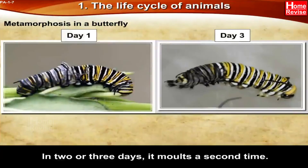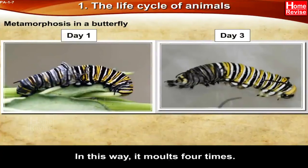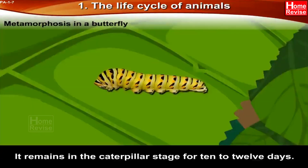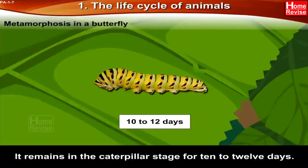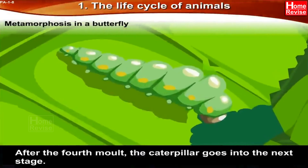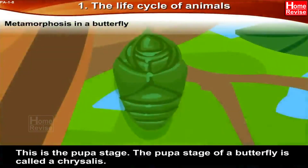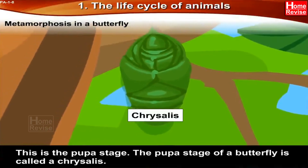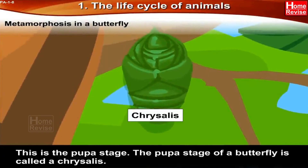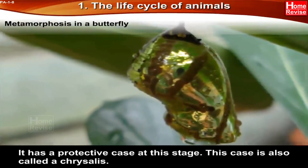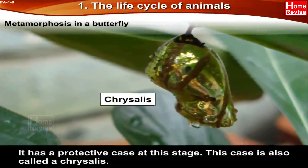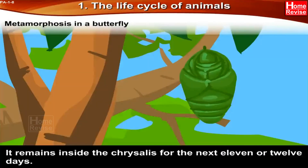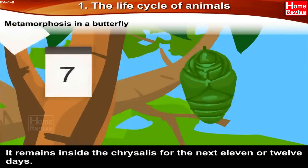In two or three days it molts a second time. In this way it molts four times in total. It remains in the caterpillar stage for 10 to 12 days. After the fourth molt, the caterpillar goes into the next stage — the pupa stage. The pupa stage of a butterfly is called a chrysalis. It has a protective case at this stage, which is also called a chrysalis. It remains inside the chrysalis for the next 11 or 12 days.